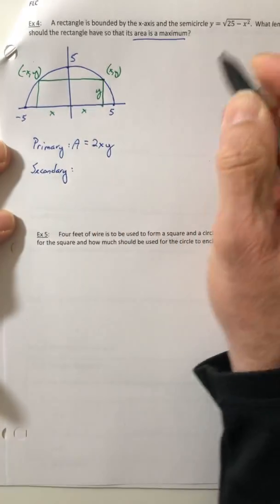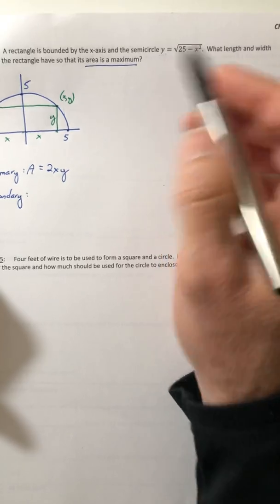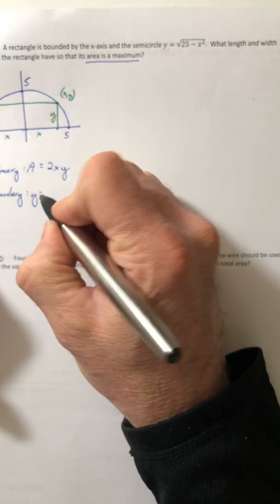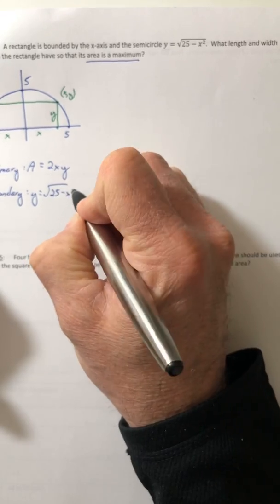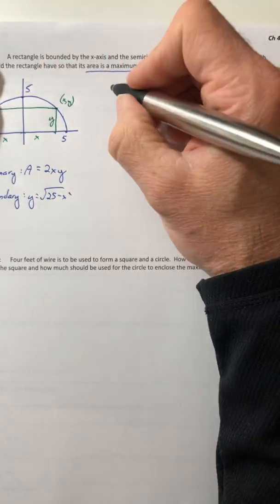So let's get our secondary. Now the secondary is going to be given by the semicircle itself. y equals root 25 minus x squared. So I know what y is. So I'm going to plug it into the primary.